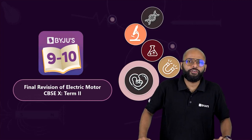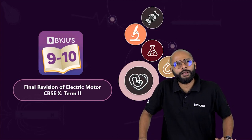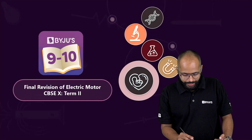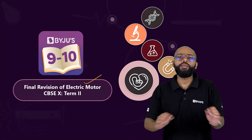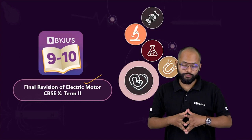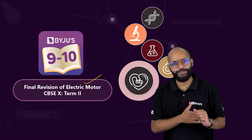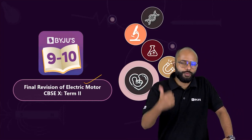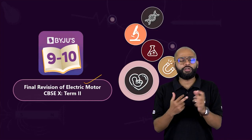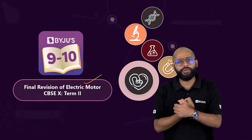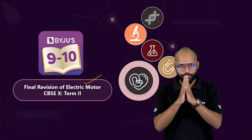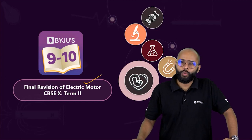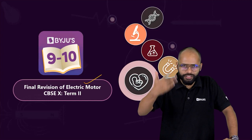That's why, from magnetic effect of electric current, there is this one topic which I can't explain how important it is — the final revision of electric motor. Don't worry, I'll tell you different possibilities, give you historical proofs, all the evidence you want. We'll discuss this so you are able to visualize it and write the answer — construction, working, split ring commutator — everything you've been scared of.